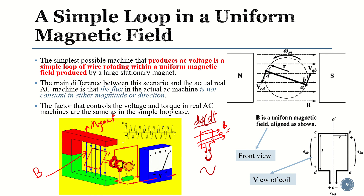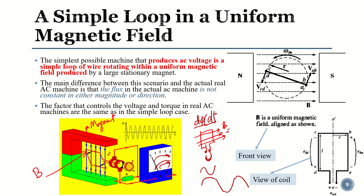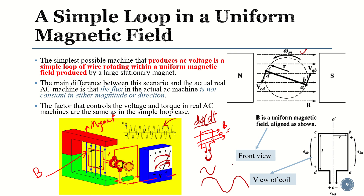The induced voltage in a simple loop present in a uniform magnetic field will be sinusoidal. As the loop rotates, the voltage goes to a positive maximum, then decreases to a negative maximum, then back to a positive maximum, and so on. In the live lecture we will derive the formulas for this induced voltage. Basically, when we analyze this simple loop in a uniform magnetic field, we get a sinusoidal output.